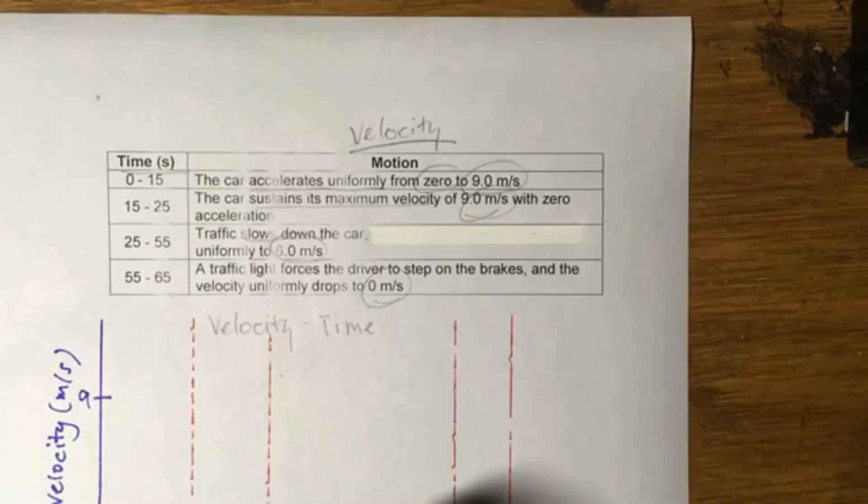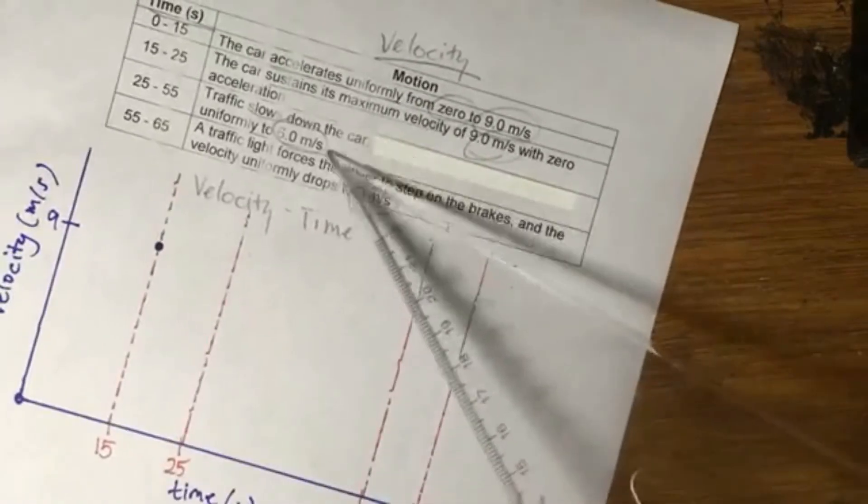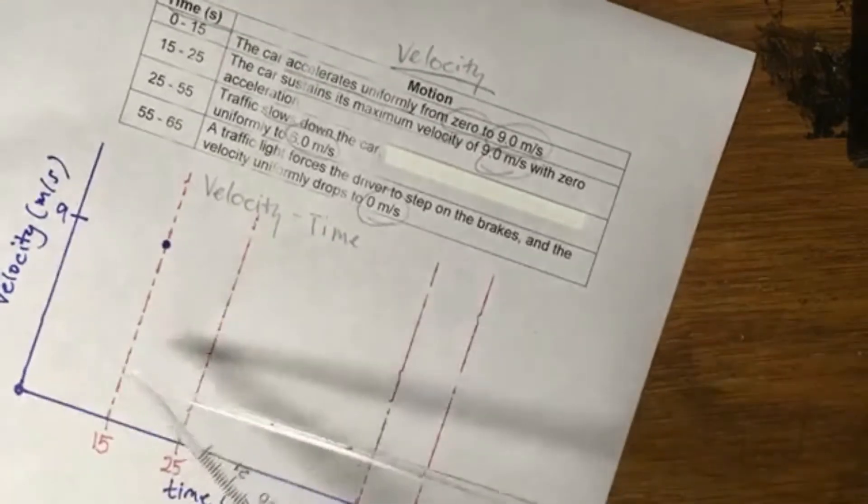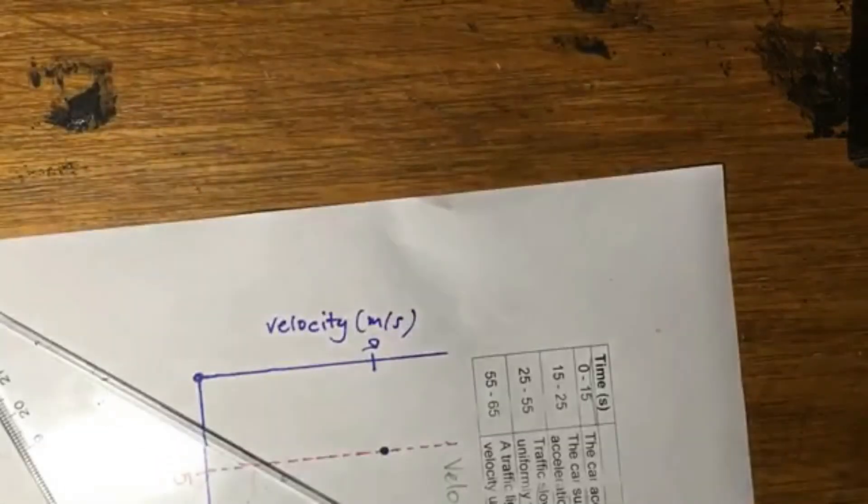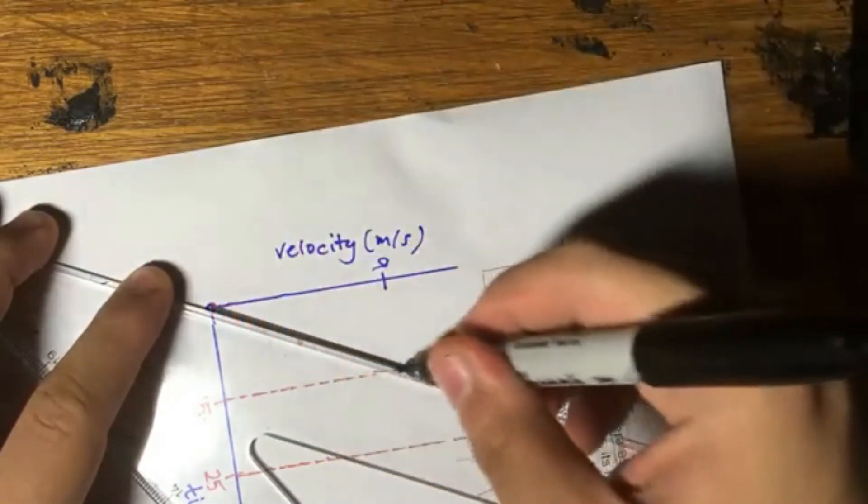We're going to move from zero to 9. And because it accelerates uniformly from zero to 9 meters per second, I'll just simply draw a line that connects them. And that line is perfectly straight, not curved.